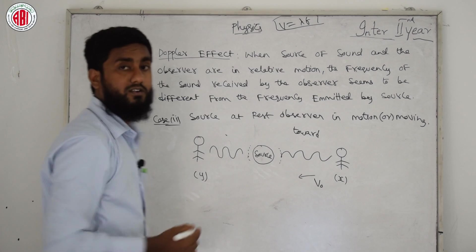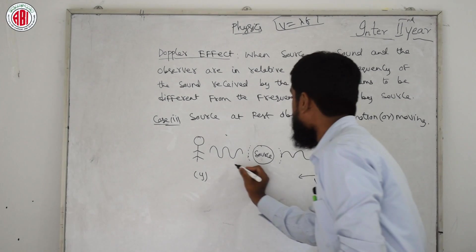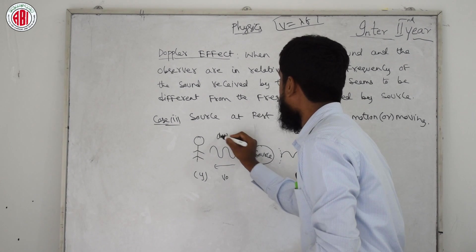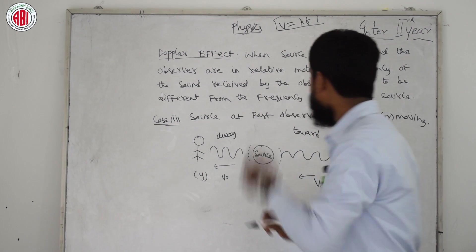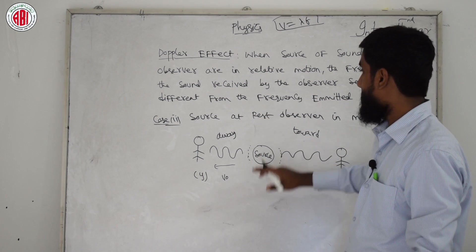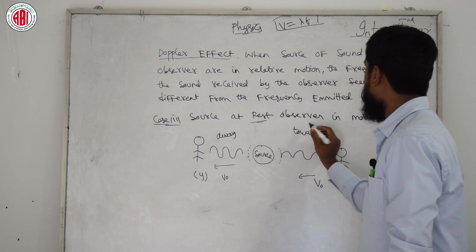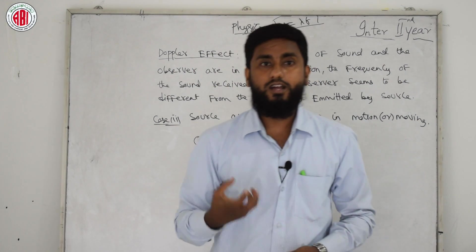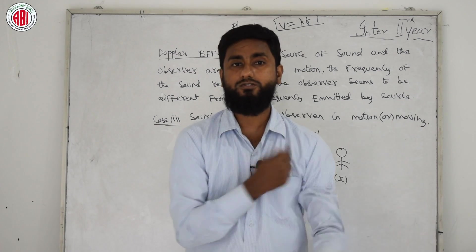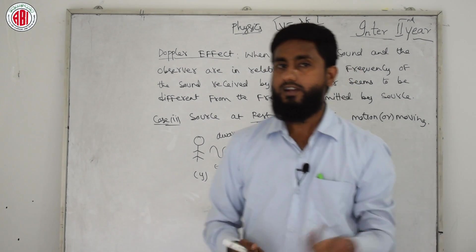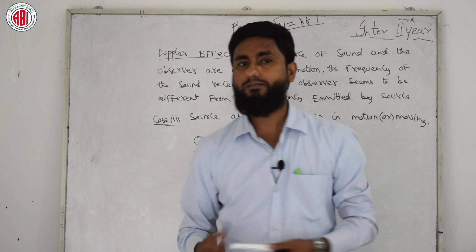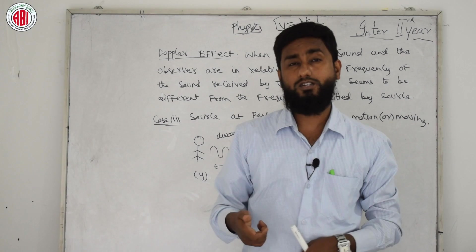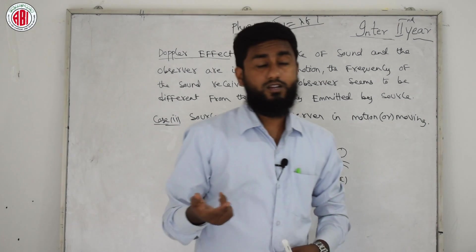So we get two sub-cases in Case 2: observer X moving towards the source, and observer Y moving away from the source. I will now dictate the theory part. Let S be the source at rest. Two observers X and Y are in motion: X moving towards the source, Y moving away.